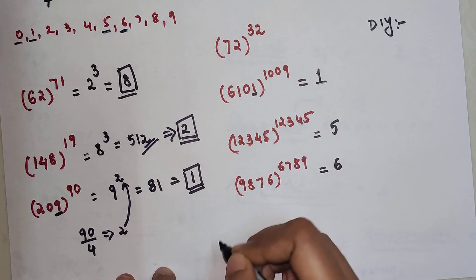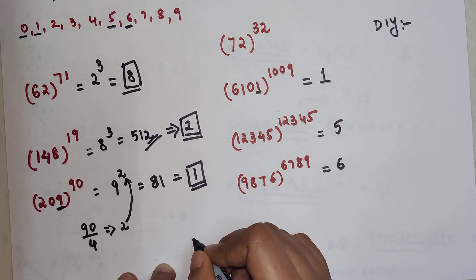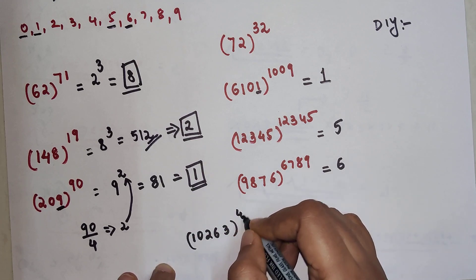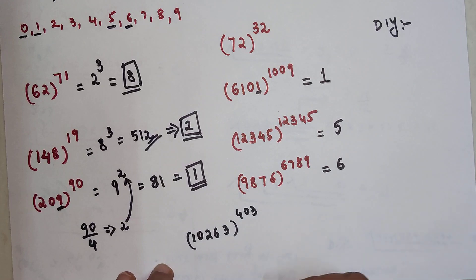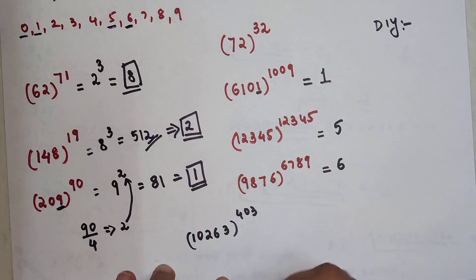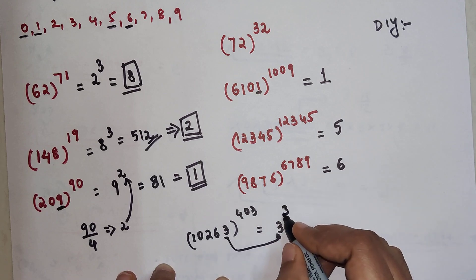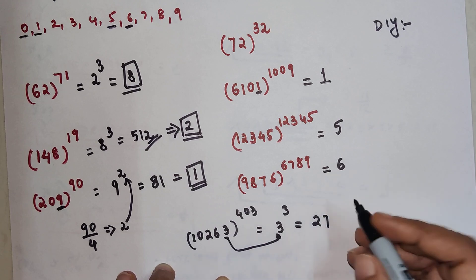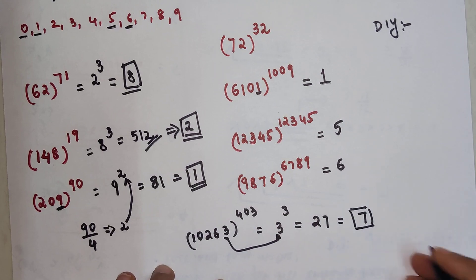Let's do one more: 10263 raised to 403. When I divide this, I'm left with a remainder of 3, and my unit digit is also 3. So 3 raised to 3 gives 27, so the unit digit for this one will be just 7.